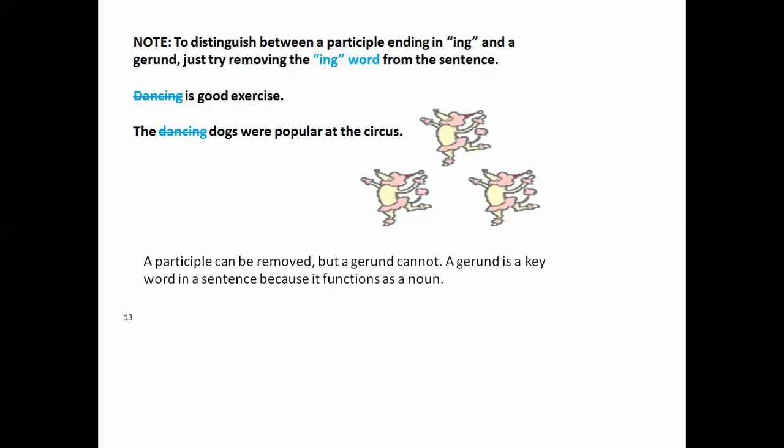Note, since both participles and gerunds end in ing, sometimes it's difficult to figure out which one is which and you have to know. So, to distinguish between a participle ending in ing and a gerund, just try removing the ing word or the phrase from the sentence. For instance, dancing is good exercise and the dancing dogs were popular at the circus. Now which one can you remove? Only the one in the second sentence. Because if you remove dancing in the first sentence, the sentence falls apart. So, a participle can be removed because it's an adjective, but a gerund cannot. A gerund is a key word in a sentence because it functions as a noun. So if you see an ing word, just try removing it from the sentence. And remember, a gerund cannot be removed and a participle can.